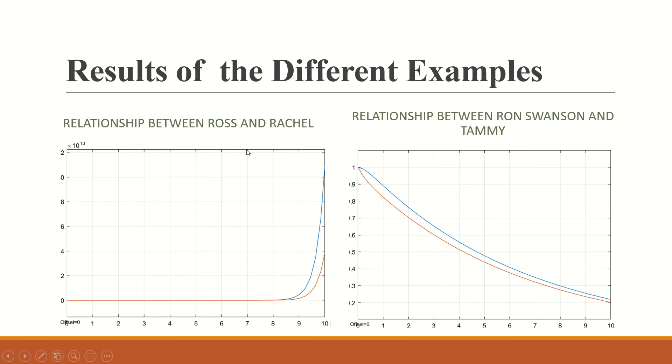These are the results. Given the initial parameters for Ross and Rachel, each of these parameters represents their feelings. Parameter A represented an initial love for Rachel and D represents Rachel's initial disinterest in Ross. At the end of this relationship it shows how it starts off stagnant but eventually becomes long-lasting and their love exponentially grows.